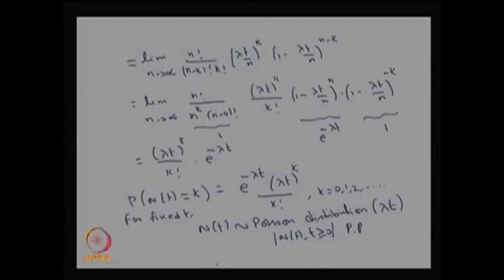Here, lambda is a constant, and there is another name for the default Poisson process: it is called a homogeneous Poisson process. There is another one called a non-homogeneous Poisson process, in which lambda need not be a constant — it can be a function of time t. The one we have derived is a homogeneous Poisson process in which lambda is a constant greater than 0. When lambda is a function of t, the corresponding process is called a non-homogeneous Poisson process.